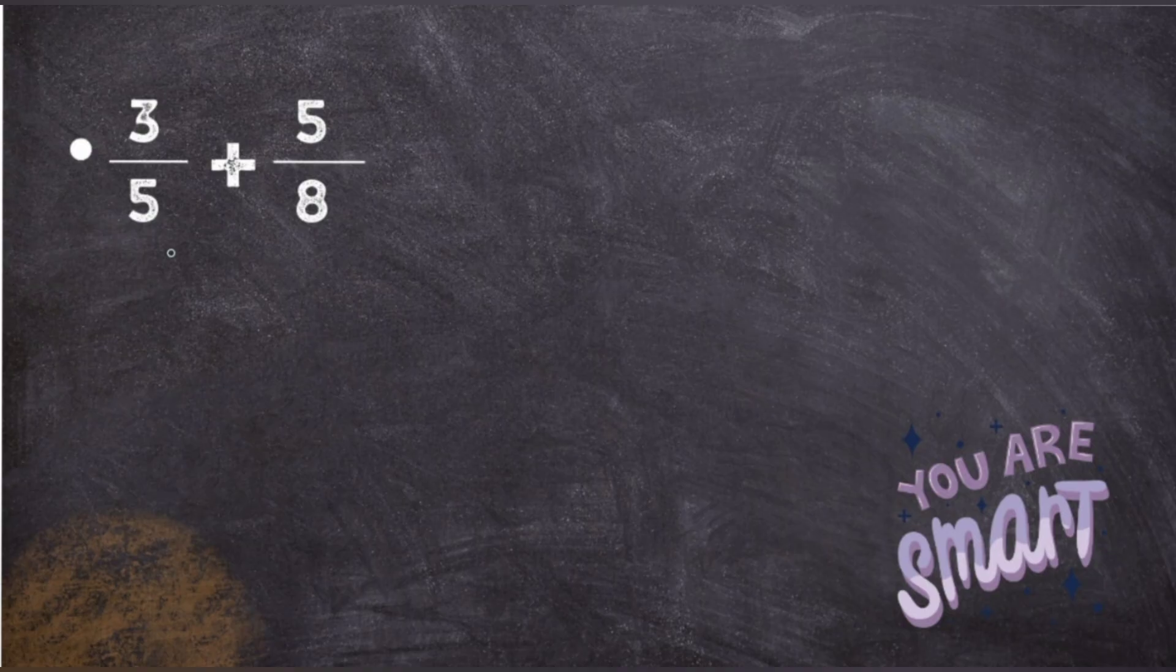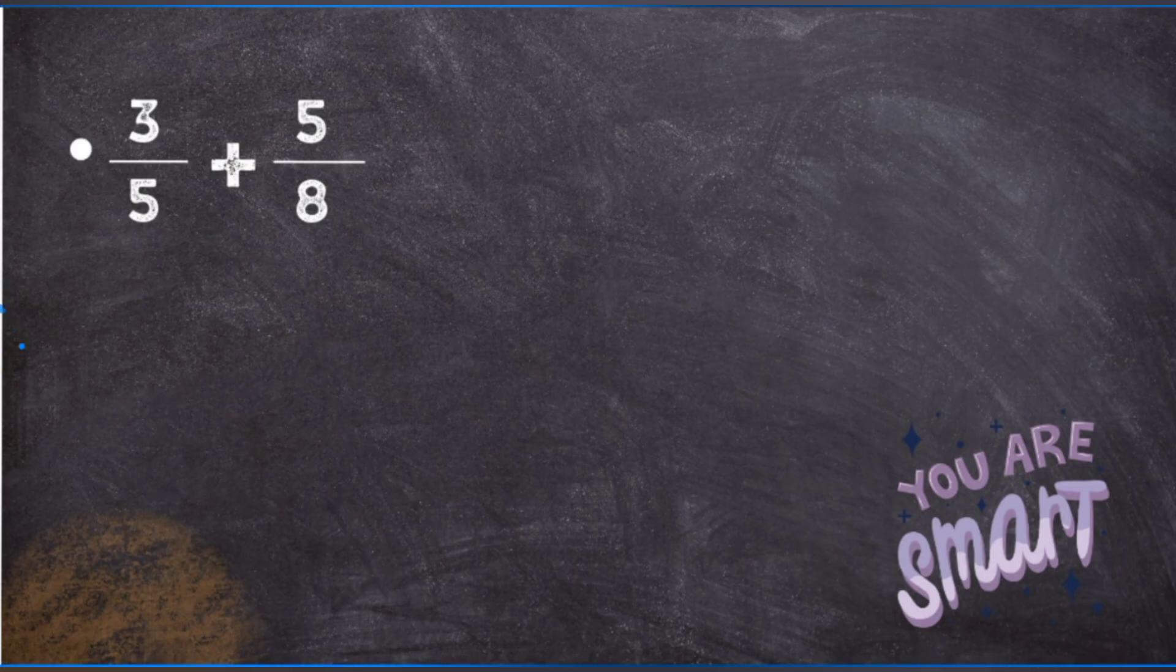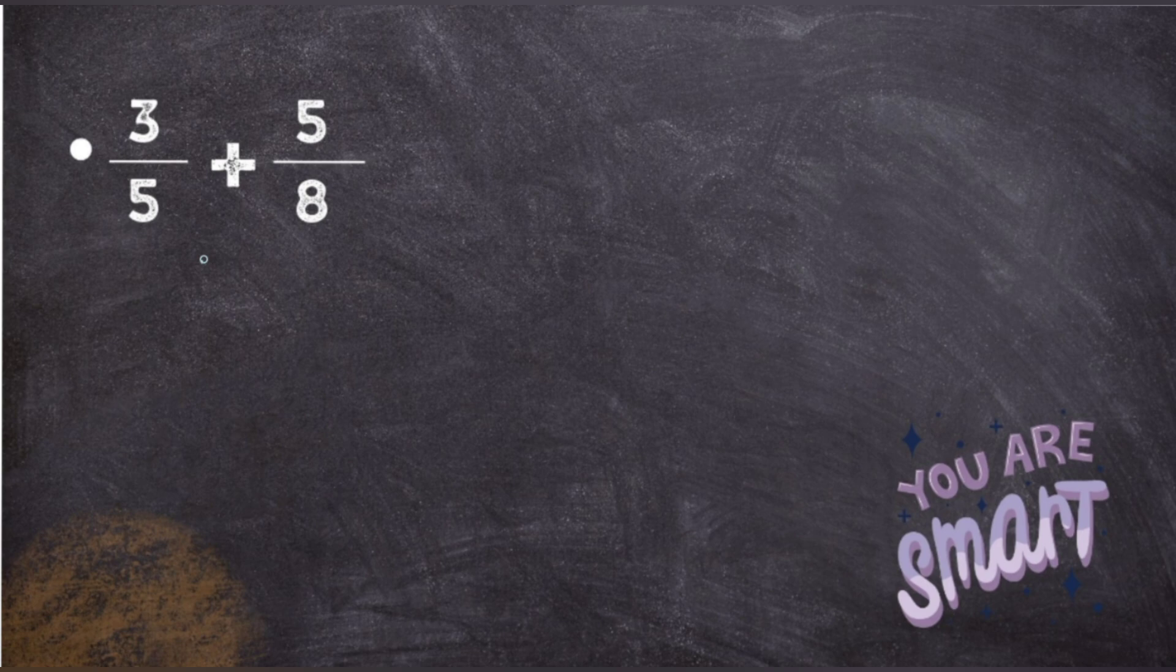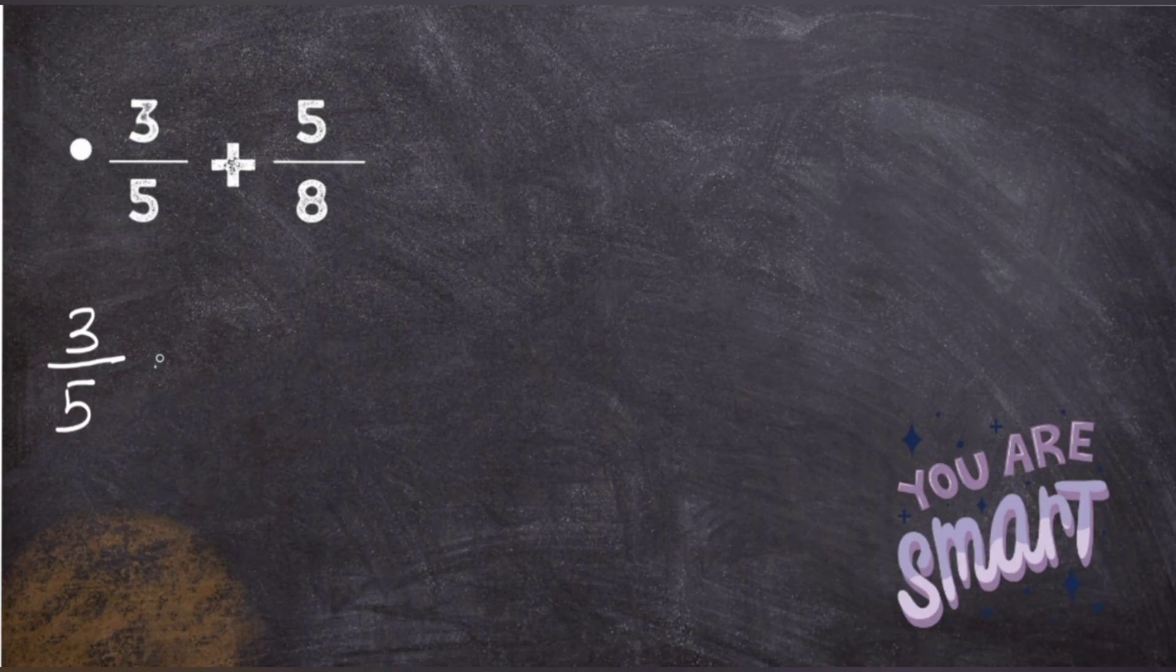Here you find that the denominators are not at all related. So what to do when you find some question like this where you cannot find an equivalent fraction, or you cannot multiply or divide anything in the denominator to get the same denominator? What you have to do is just simply go and multiply both numerator and denominator by the number present in the denominator of other fraction.